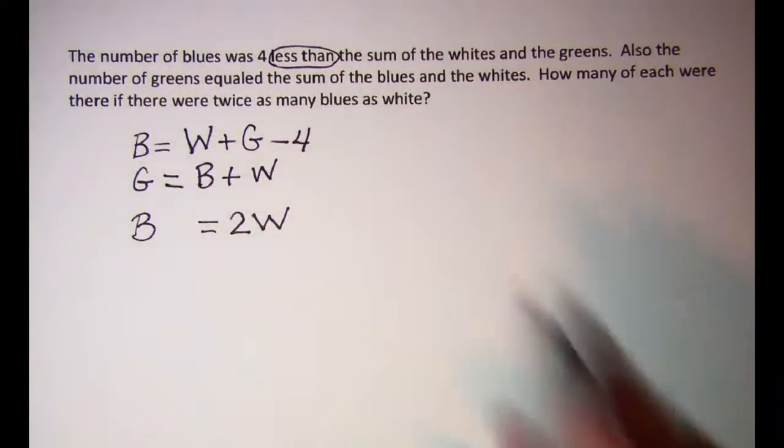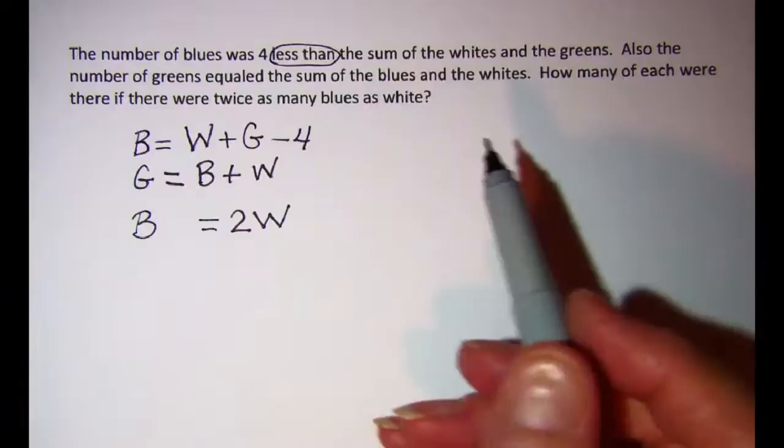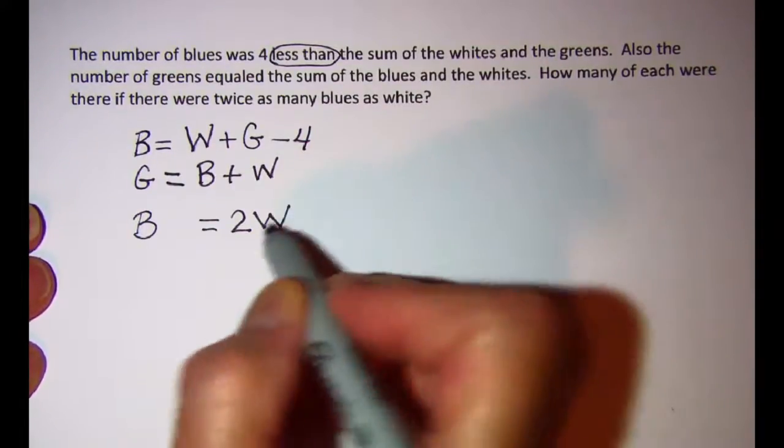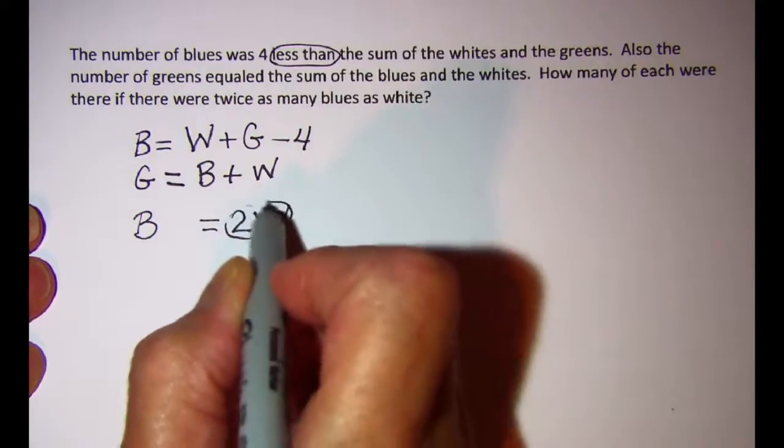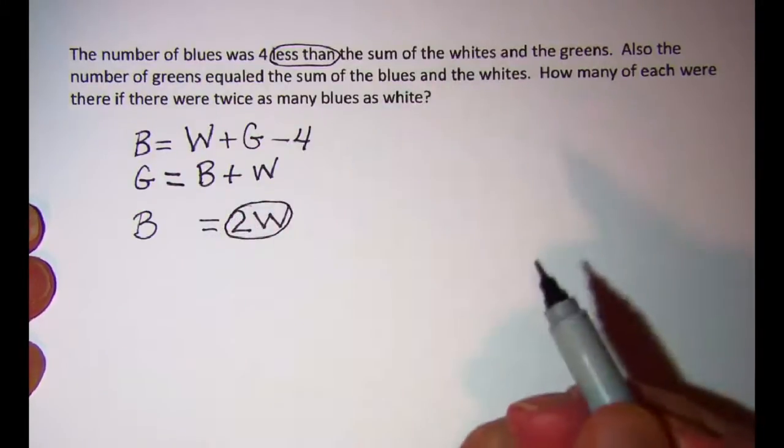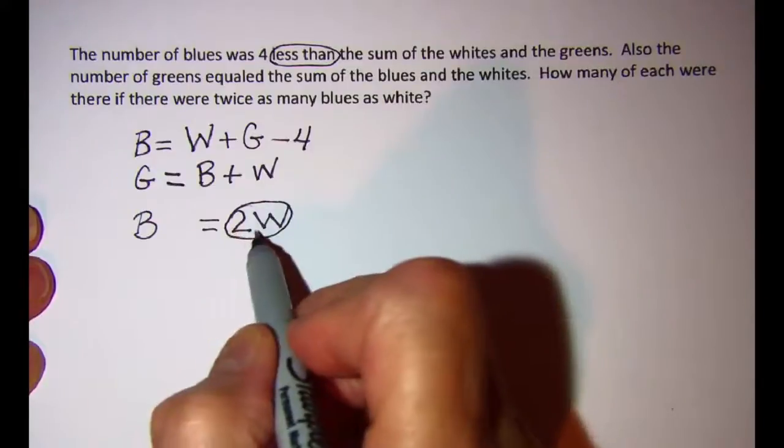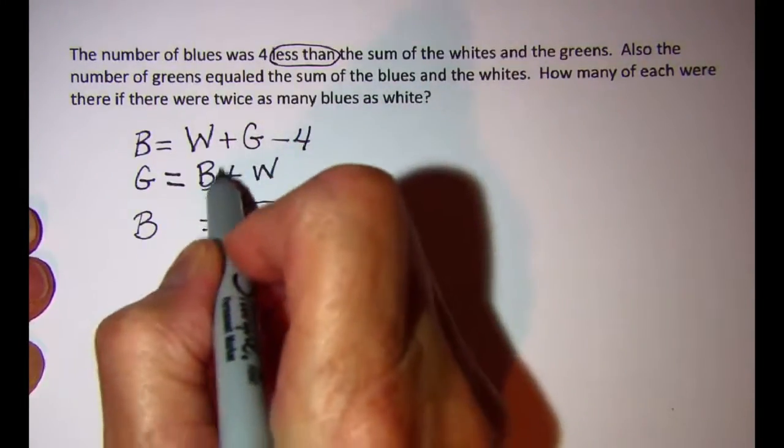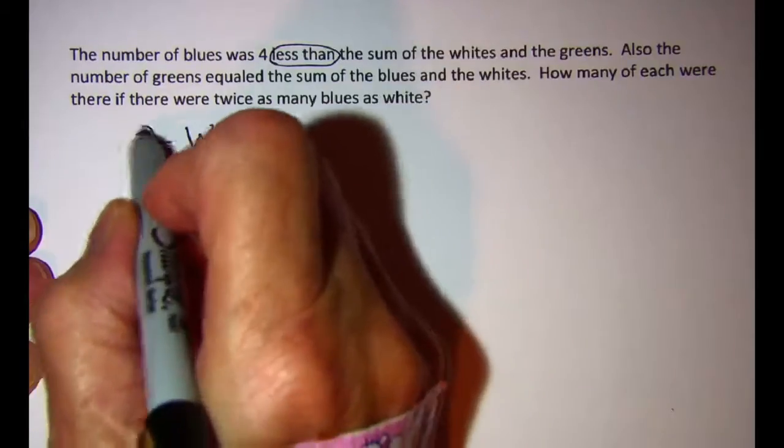So we have three equations, three unknowns. Let's go ahead and substitute. There's a lot of ways to attack this problem. I'm going to go ahead and put 2W in for B on all of these equations.